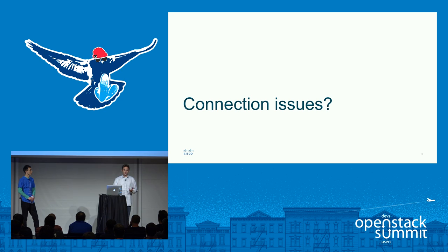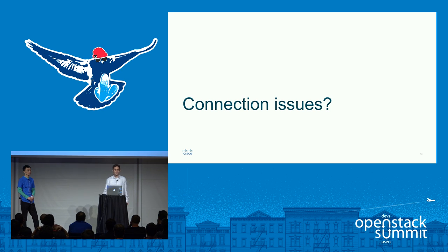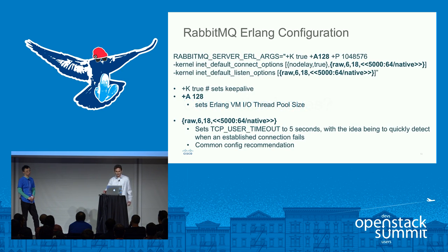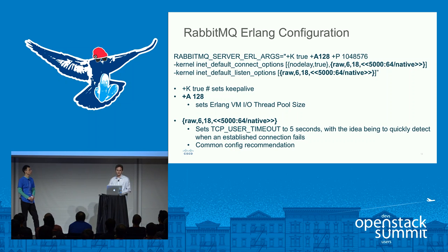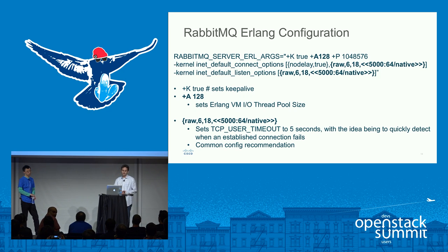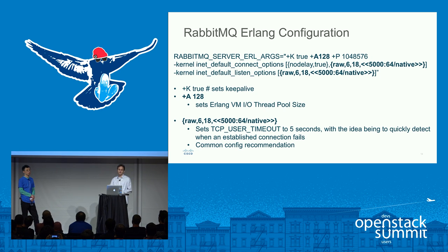Even with the tuning on the client side, we still never got to the root of the problem — what was actually causing these connection issues. That's when we decided to start digging deeply into Rabbit, particularly into the Erlang configuration. There are a few options in the Erlang arguments that are important to add, especially the Keep Alive settings and adding plus A for 128, which sets the Erlang VM IO thread pool size. Rabbit recommends you set this to at least 128.